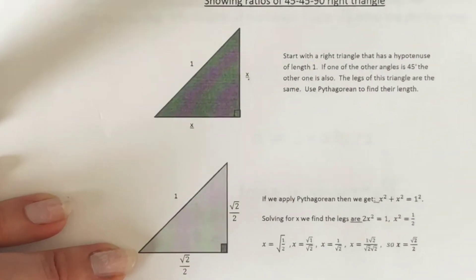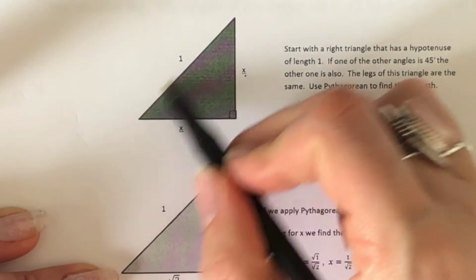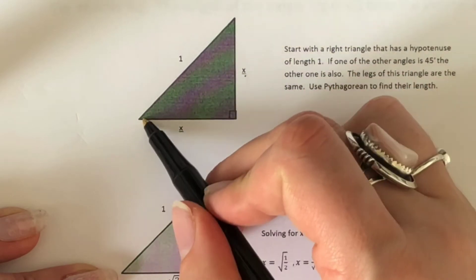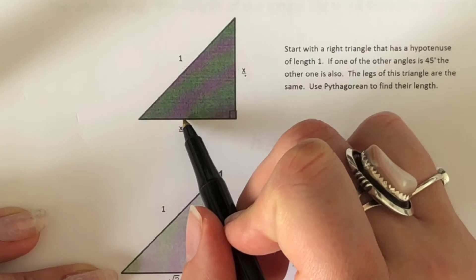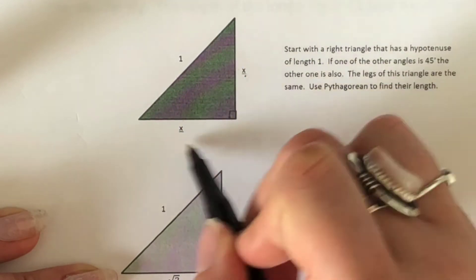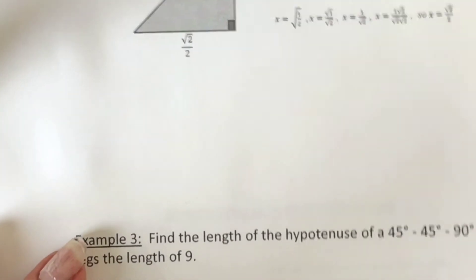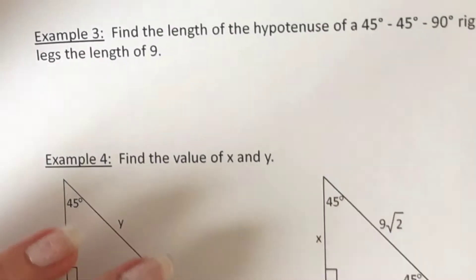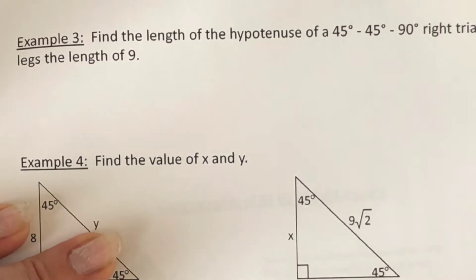If we have an example where we start with a right triangle that has a hypotenuse of 1 and two legs of X and X — remember they're going to be the same size — we can use the Pythagorean theorem or we can use our little shortcut here, which will be a lot quicker. Let's look at some more specific examples.